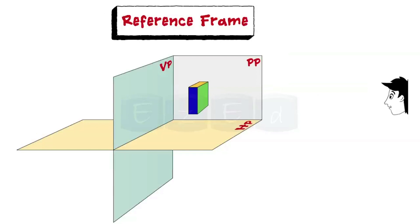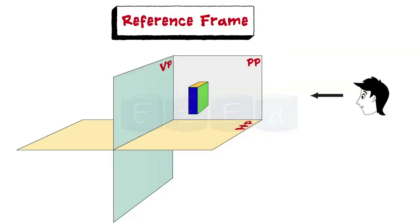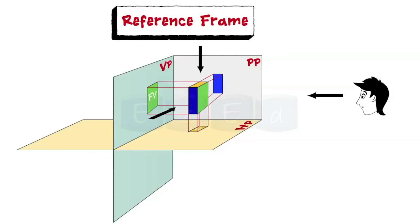The object is placed between the observer and the vertical plane. When the observer sees the object from the front, its front part is projected in the VP and the projected image is known as front view. Similarly, when the observer sees from the top, its image is projected in HP and the image is known as top view. And when seen from the left-hand side, the image projected on the profile plane is known as left-hand side view.